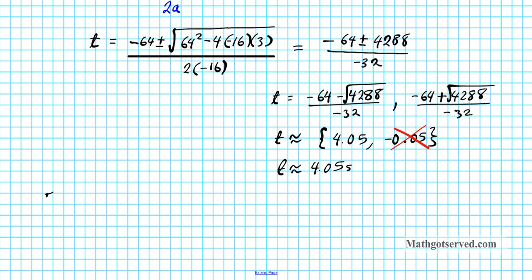It means that the baseball hit the ground after 4.05 seconds, or you can write it in the exact form, negative 64 minus the square root of 4,288 over negative 32. So that's the answer to the B part.